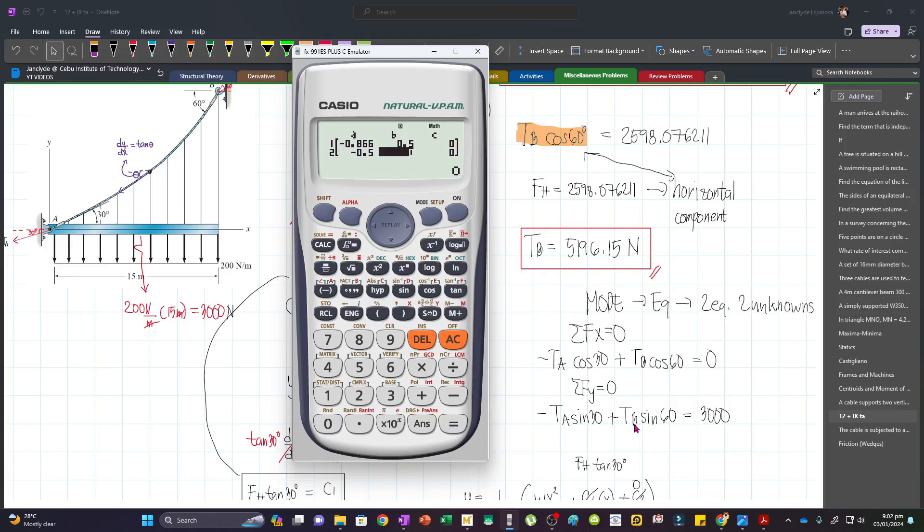And then TB, which has a coefficient of sine 60. And then that's equal to 3000, so we will type 3000 here. And so now we will be able to get TA and TB.